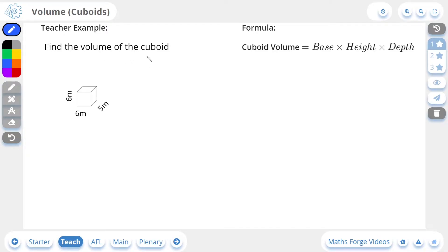Here we're being asked to find the volume of this cuboid. It's a 6 by 6 by 5 cuboid. And if we look at the formula, to find the volume of a cuboid, we multiply the base by the height by the depth.